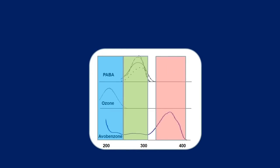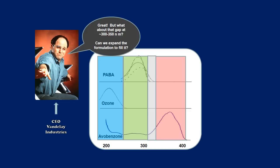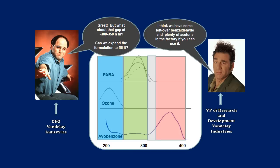We've got our proposed sunblock formulation, including ozone to take care of the UVC, that's free, Mother Nature provides it. Para-aminobenzoic acid to absorb in the UVB region, and avobenzone to absorb in the UVA. So we go to our interview. We meet with the president who says, that's great, but I have a concern. Apparently there's a little bit of bandwidth there that you haven't quite got covered. That 300 to 350 nanometer region is a little bit thin. And the VP of Research and Development happens to be there as well and says, Well, we have some benzaldehyde and acetone left over in the factory. Is there anything you can do with that? Well, in this case, there is.